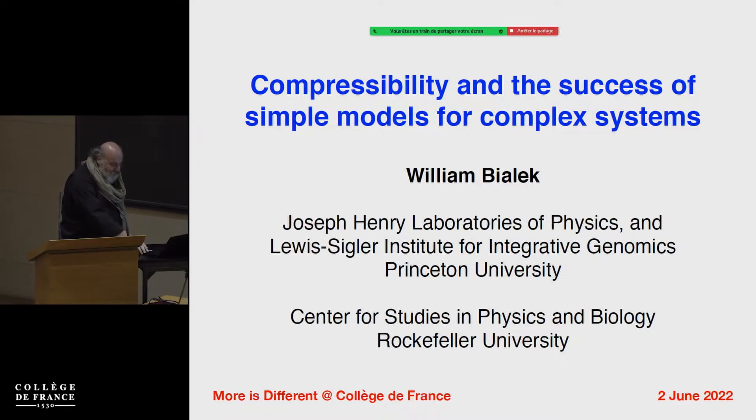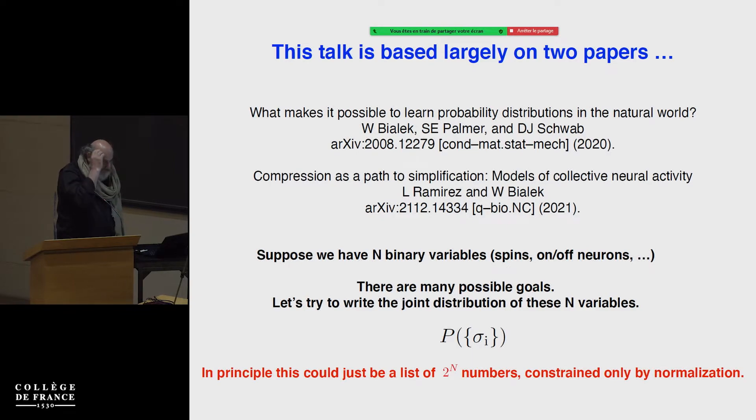So the theme is the same as Jim's talk. The question is why simple models work. I'm going to try and talk mostly about very recent things which are contained in these two preprints. And my version of what does it mean for a simple model to work, how do you describe the world, I take a very concrete version of the problem, relatively simple, very familiar to many of you. Imagine that you have n binary variables. So they could be spins, they could be neurons that are either on or off, as they will be later on in the talk.